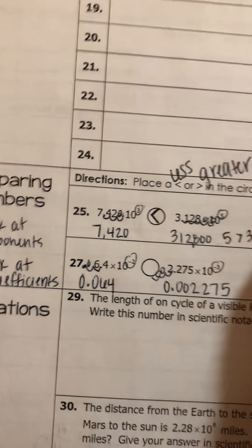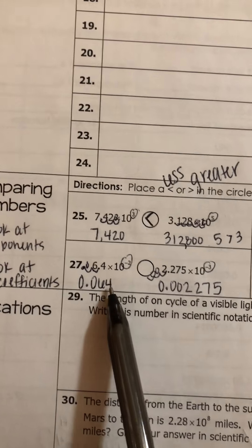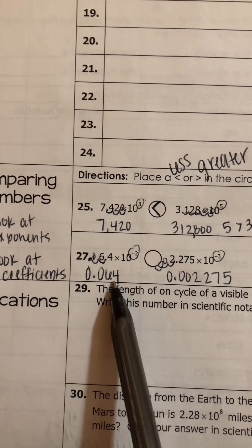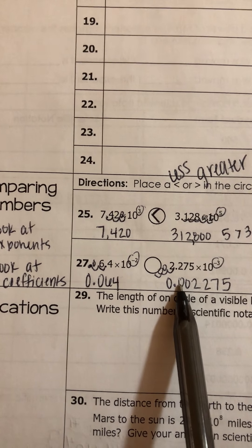Okay. So this is where place value understanding really comes into play. I have 64 thousandths here. And in this one, I have, this is my tenth place, hundredths,